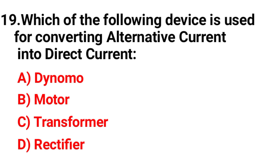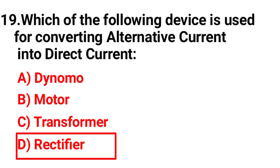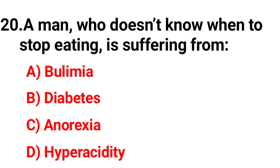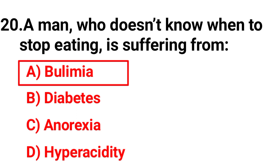Question nineteen: Which of the following devices is used for converting alternating current into direct current? The correct answer is option D, rectifier. Question twenty: Which among the following causes Dum Dum fever or kala-azar? Friends, your correct option is option C, leishmania protozoa.